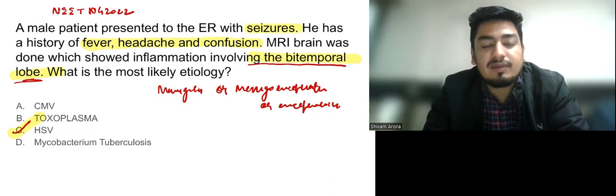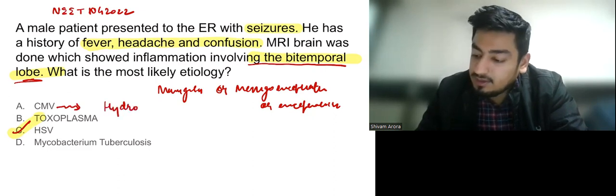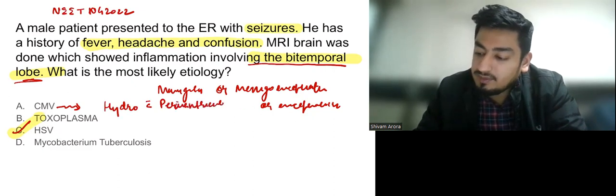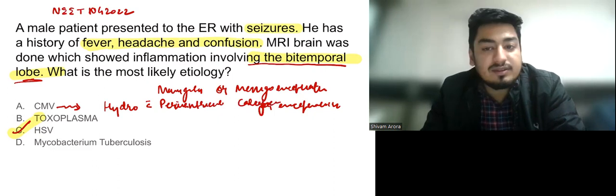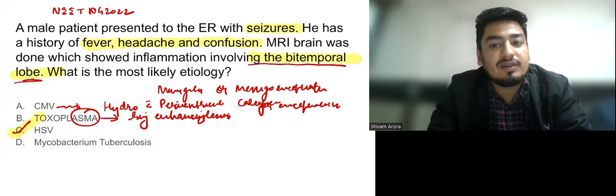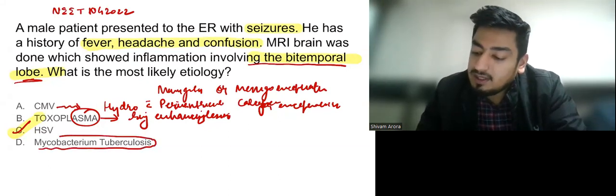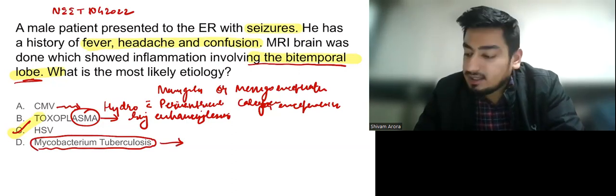HSV encephalitis mostly involves the bitemporal lobe. CMV mostly presents with hydrocephalus with periventricular calcification. In toxoplasma, we generally have ring-enhancing lesions, and specifically there is usually a history of HIV. For Mycobacterium tuberculosis, it can present as tubercular meningitis, which again shows ring-enhancing lesions.